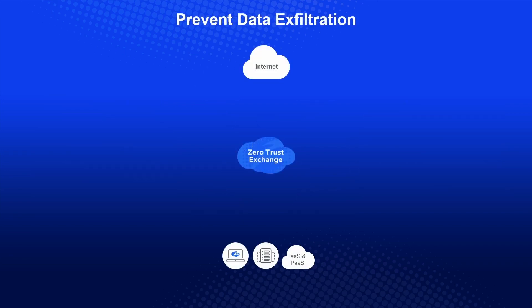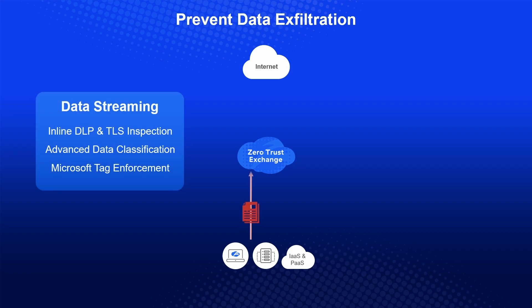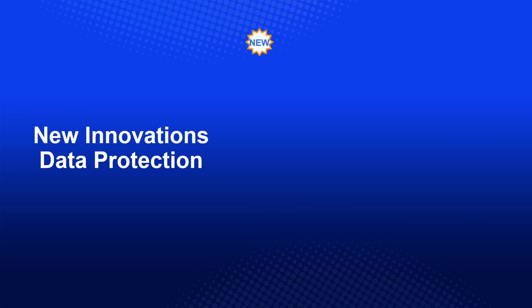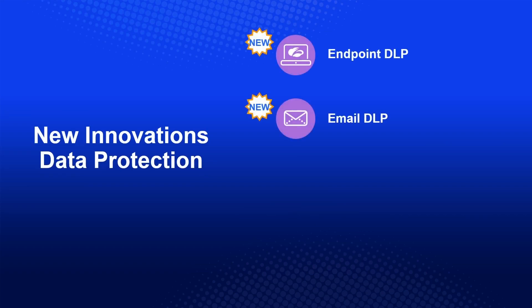For data exfiltration, the DLP technology we've been building for several years does a great job with inline inspection. We have tagging technology and full TLS inspection to do that. What we introduced in the past couple of years is browser isolation, where you can stream pixels and pixels only — no data gets out. These innovative cases help you actually replace VDI, which is often a pretty expensive solution in your data center, and most users find VDI too slow. Here's a quick glimpse of DLP innovations.